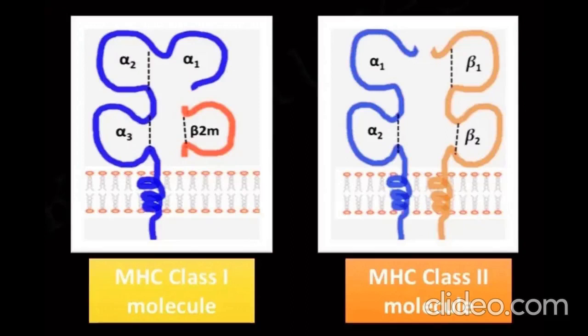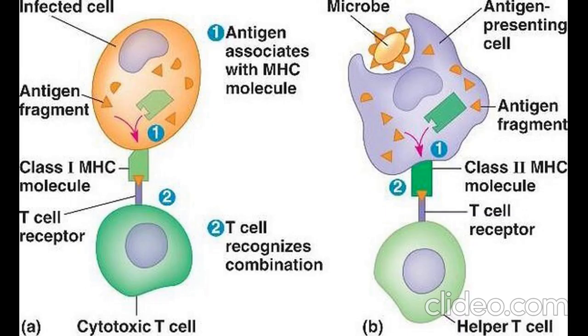The major histocompatibility complex (MHC) is a group of genes that encode for proteins that play a crucial role in the immune response by presenting antigens to T-cells. MHC molecules are found on the surface of cells and display small peptide fragments of proteins derived from inside the cell, such as those from viruses or intracellular bacteria. This allows T-cells to recognize and respond to pathogens that have invaded the cell.